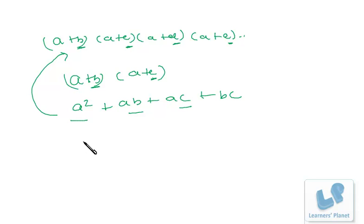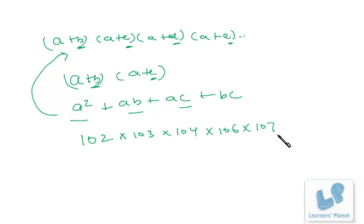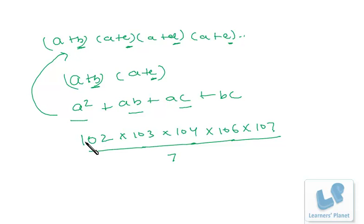For example: 102 × 103 × 104 × 106 × 107 divided by 7 — what is the remainder? The last number divisible by 7 before 101 is 98. So 102 = 98 + 4, 103 = 98 + 5, 104 = 98 + 6, which can also be written as 105 − 1, that is −1. Similarly 106 = 105 − 2, that is −2. And 107 remains as small numbers 1 and 2.